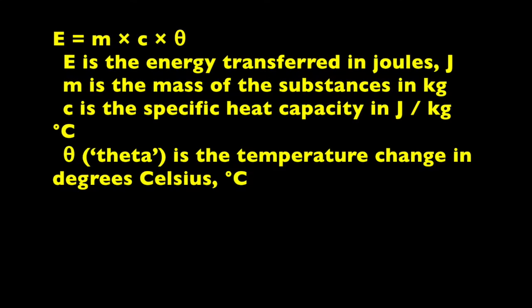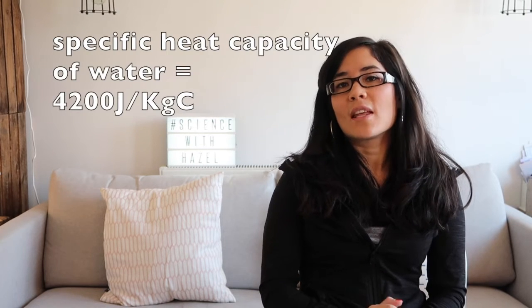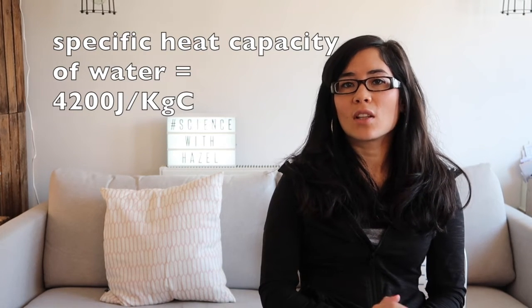You may be asked to use the specific heat equation, which is all to do with calculating the energy of the substance. The equation is E — that's change in energy — equals mass times specific heat capacity times temperature change. So they could give you an experiment where they're heating some water. You get the mass of the water, for example 100 grams, times it by its specific heat capacity — which is a very specific number — then times it by the temperature change given in the question. Substitute all those numbers in and you'll get an energy change in joules.